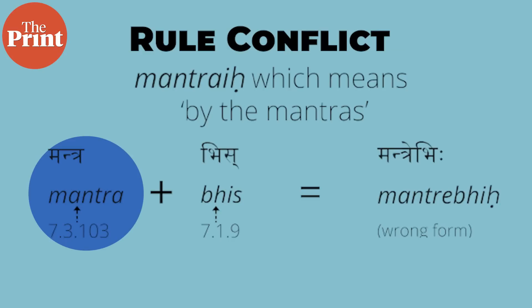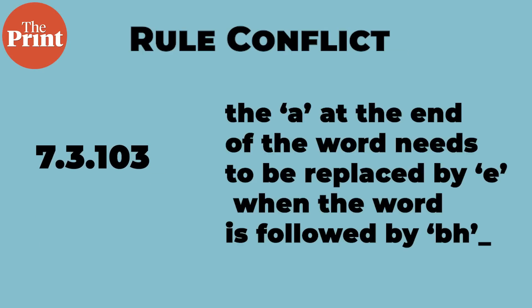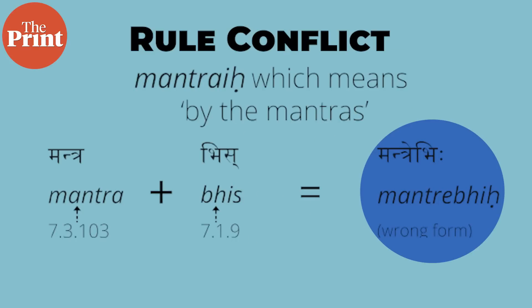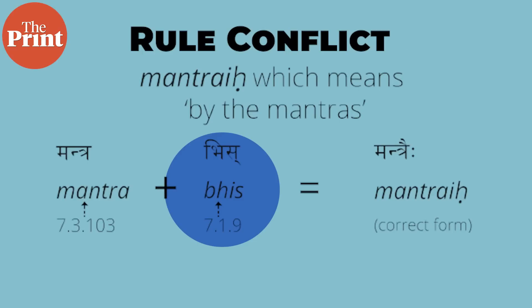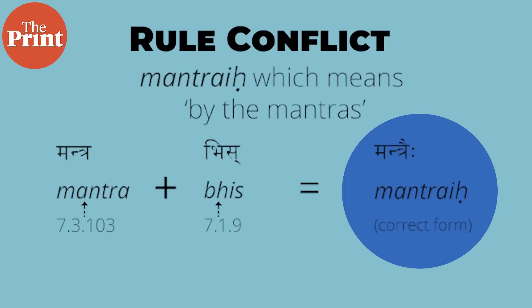When 'mantra' and 'bhis' are combined, there are two simultaneous rules that come into play according to Sanskrit grammar as outlined by Panini. Rule 7.3.103 applies to the word 'mantra,' which ends with an 'a' sound. It states that the 'a' at the end of the word needs to be replaced by 'e' when the word is followed by another that starts with 'bh,' giving the form 'mantrabhi.' The other conflicting rule, 7.1.9, applies to the word 'bhis' and states that when the preceding word ends with an 'a,' replace 'bhis' with 'is,' giving the form 'mantrais.'